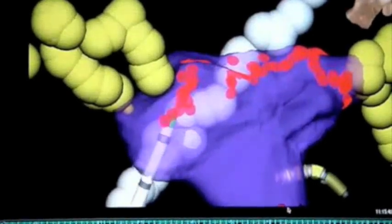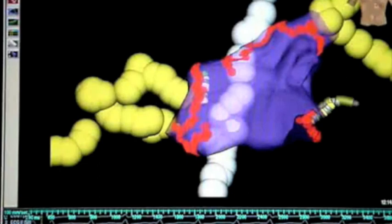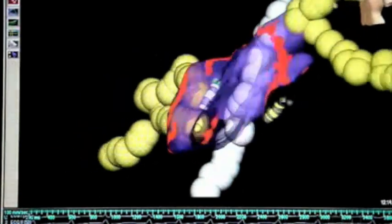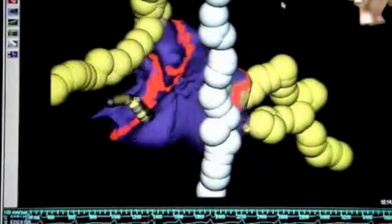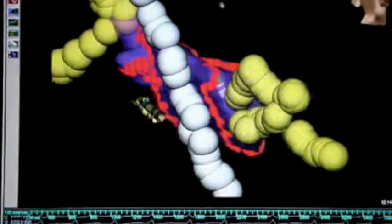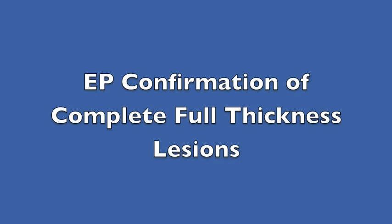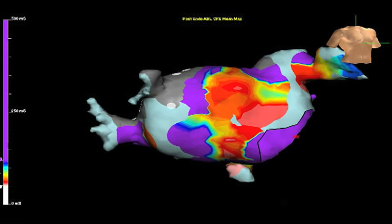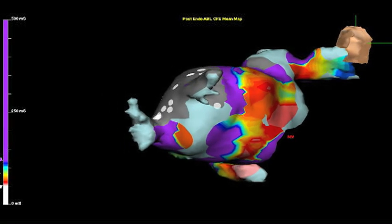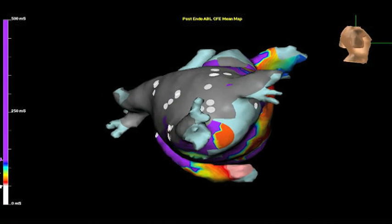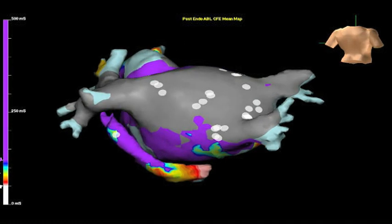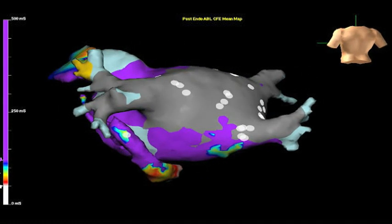Once we complete the radiofrequency, we're able to go about in a very systematic manner and confirm the complete full-thickness lesions and assess for full block from the pulmonary veins. With this, we ensure that we've performed an optimal procedure for this complex arrhythmia patient.